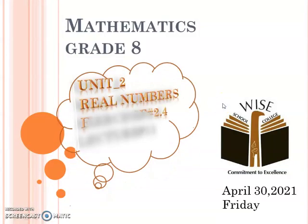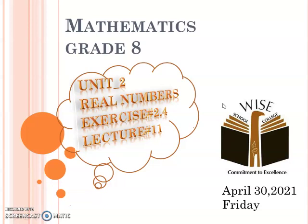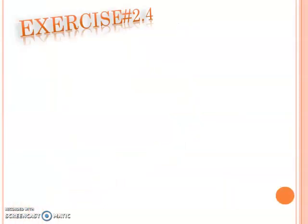This is the 11th lecture of mathematics. In the previous two lectures, we discussed two methods for the solution of square roots: the first one is the prime factorization method and the second is the division method. Today we will start Exercise 2.4 in which we will use these two methods.